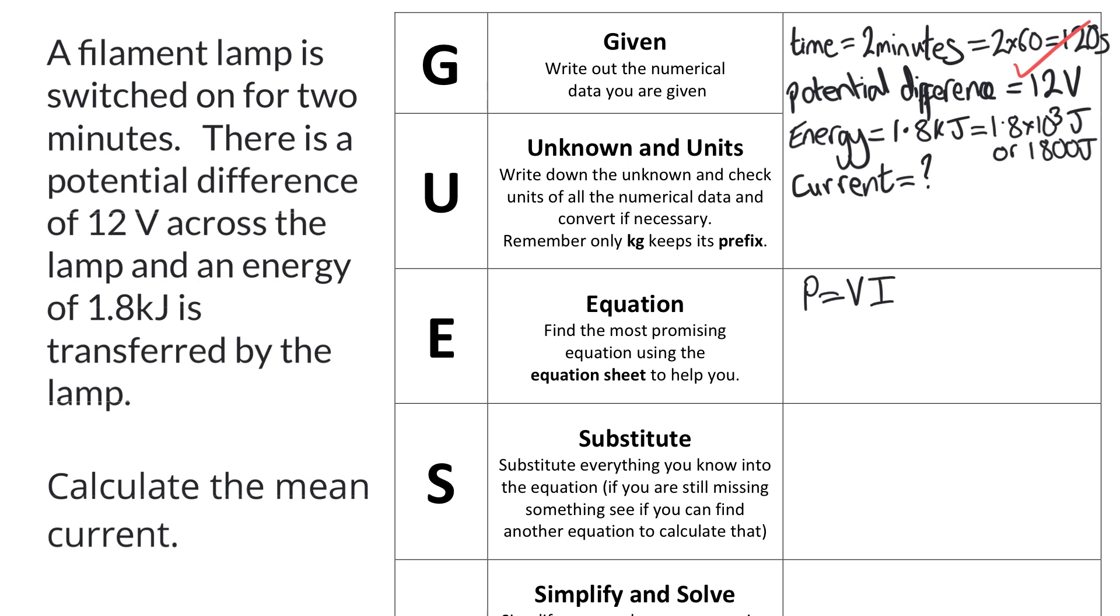Now if we check, we know potential difference. Current is the thing that we're trying to find, but we have a problem at the moment because we don't know the power which we would need to know in order to calculate the current using this equation. So at this point we need to hunt for another equation from the equation sheet which will allow us to calculate power using any of the things that we haven't used so far, and then once we've got power we can come back to this equation and work out the current.